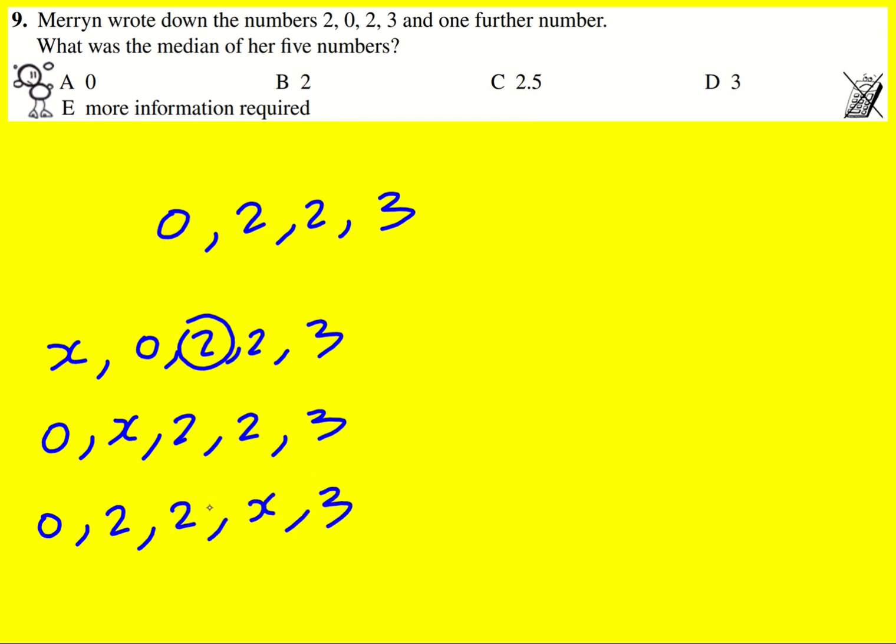And now we see that it's this one that gets shifted down to the middle position, but it's still going to be 2. And when you swap x and 3 round it's not going to affect it at all.